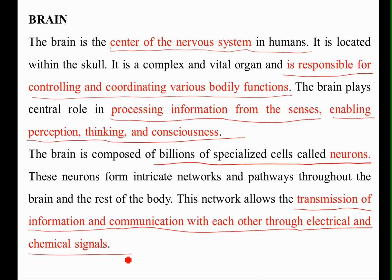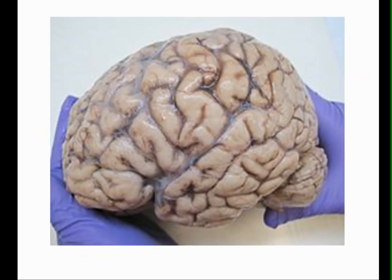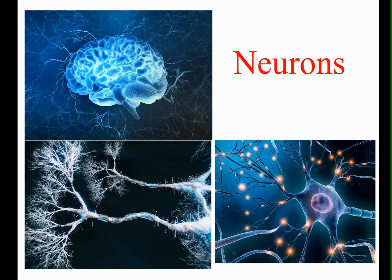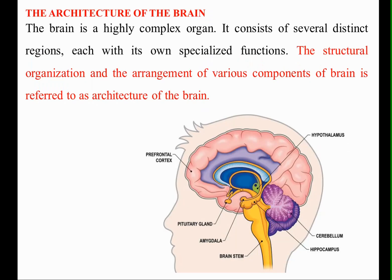By transferring electrical and chemical signals, spontaneous actions are observed with the help of the brain. The brain is composed of a special type of cell called a neuron. Now I will move into the architecture of the brain.